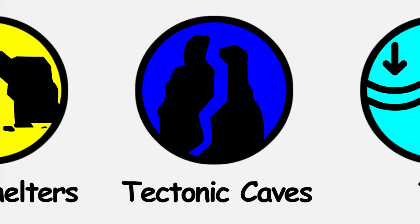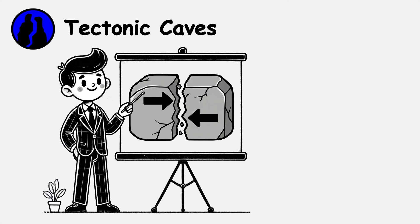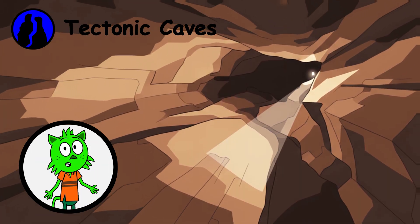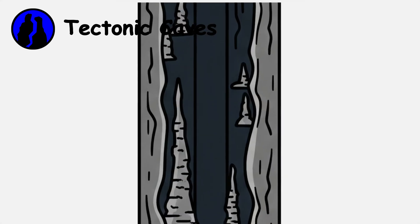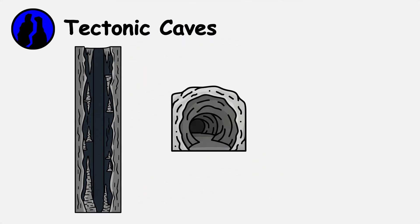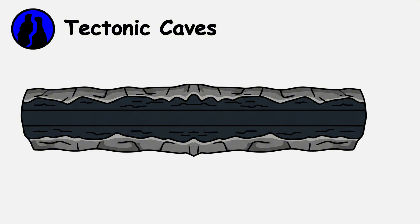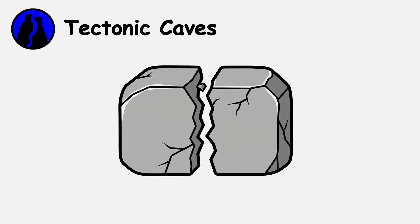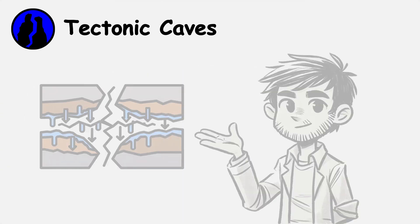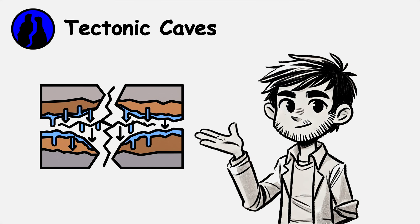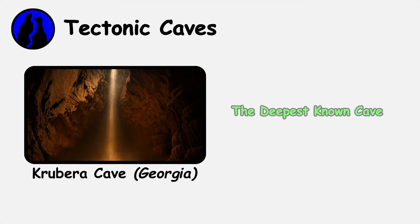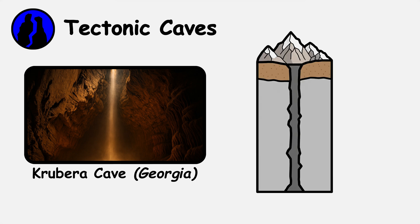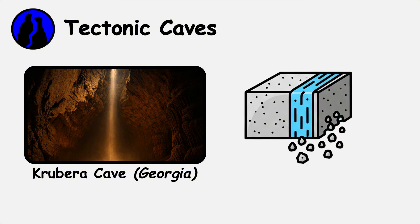Tectonic Caves. Earth's crustal movements create tectonic caves when rock masses shift along faults or fractures. These form suddenly during earthquakes when rock blocks separate, creating open spaces. Tectonic caves typically feature straight passages following fault lines, and angular rooms with ceiling and wall surfaces that would match like puzzle pieces if rejoined. Initial fracturing creates pathways for water to penetrate limestone, allowing solution processes to enlarge passages over time. Krubera Cave in Georgia, the deepest known cave at 7,208 feet, follows near-vertical fault zones deep into a mountain range, combining tectonic formation with water dissolution.